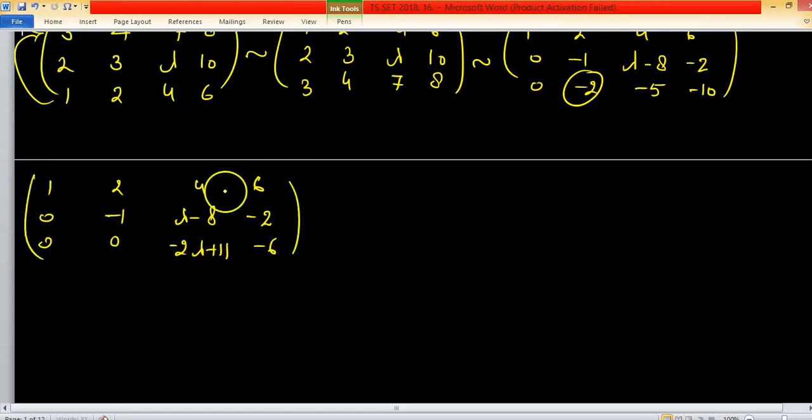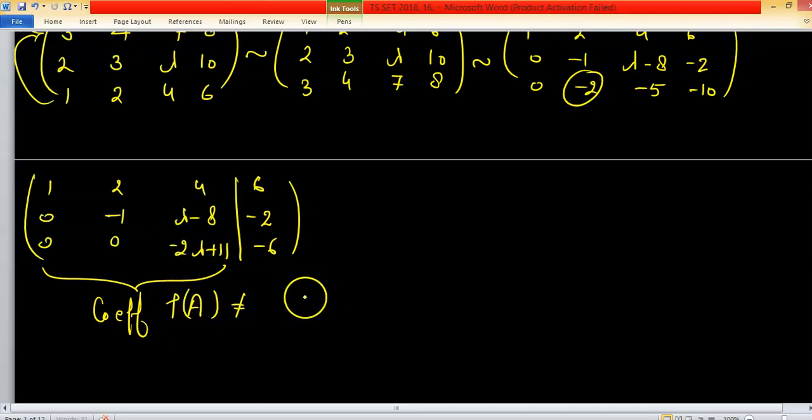So this is our coefficient matrix, and the complete augmented matrix. For no solution, the rank of the coefficient matrix must not be the same as the rank of the augmented matrix. So this entry should be zero.